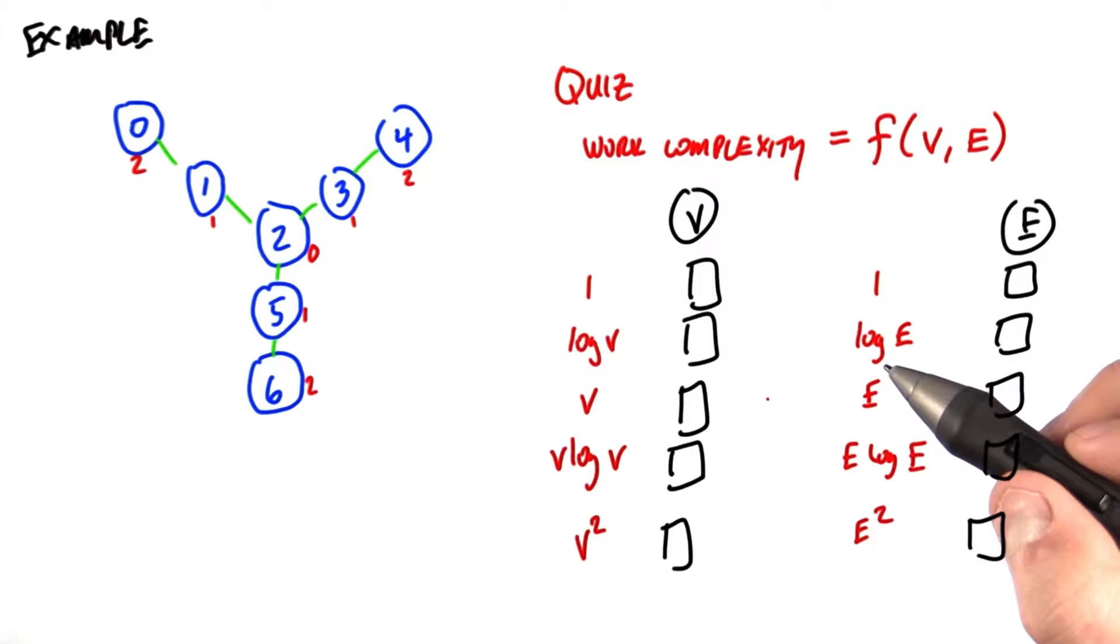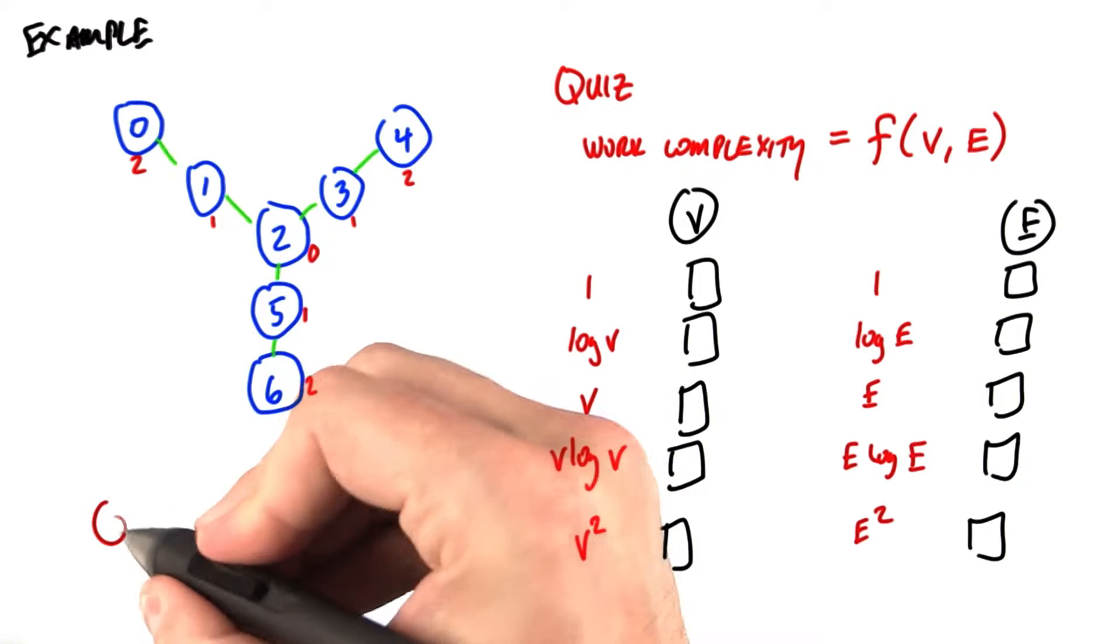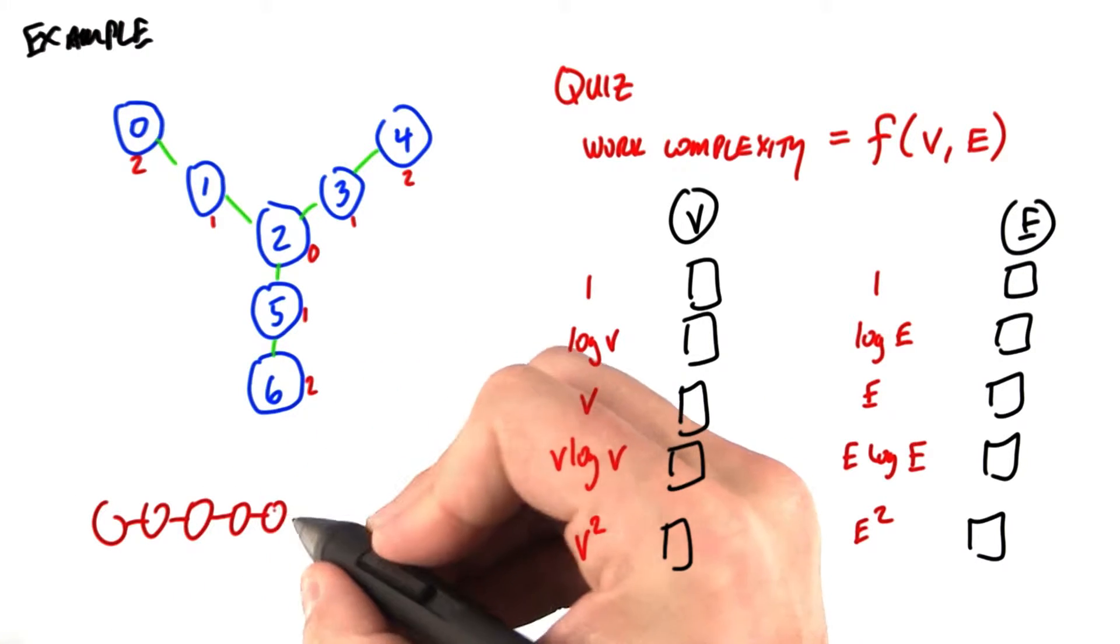So let's think about the maximum number of iterations that we might have. What graph is going to give us the most iterations? And that graph is going to be this awful looking linear chain.